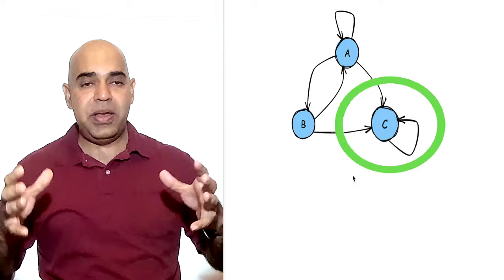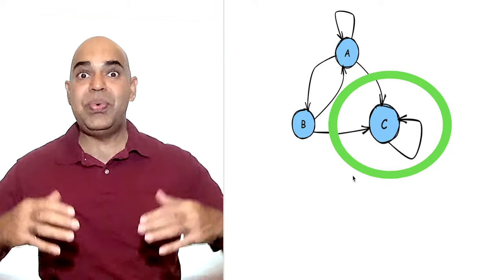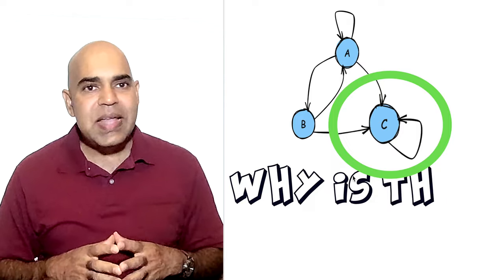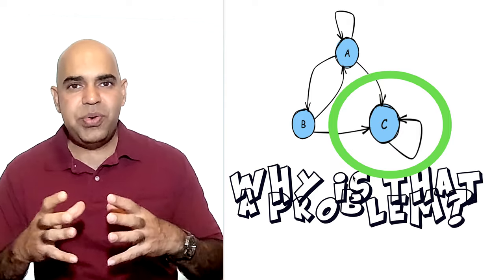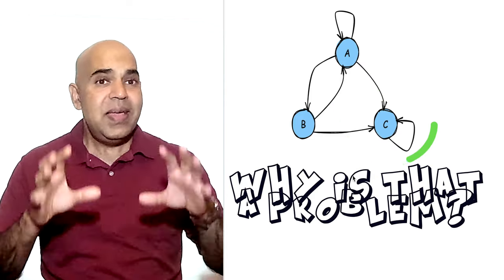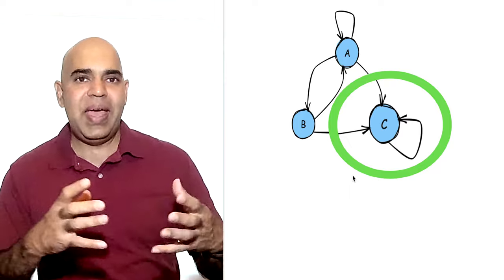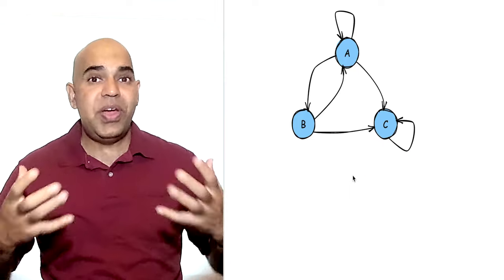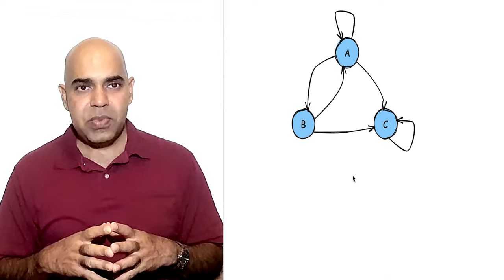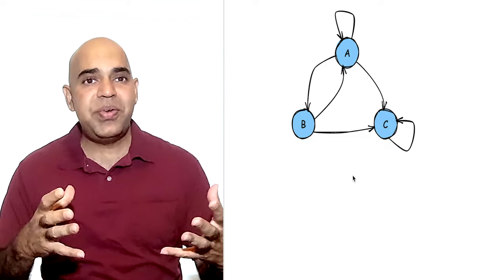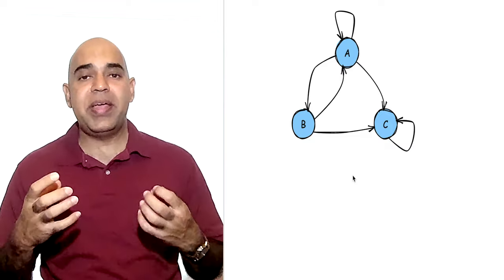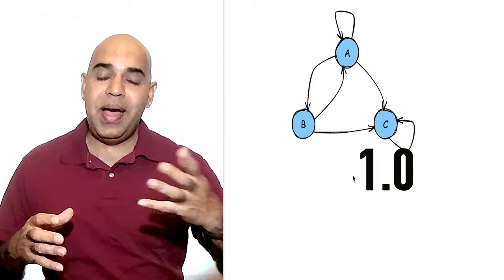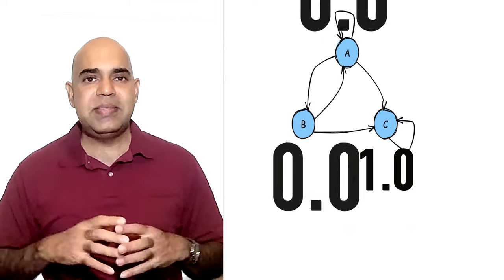A spider trap does not hyperlink to other websites. Why is that a problem? The spider trap webpage on the internet would get all the page rank juice after running the page rank algorithm. So the spider trap will have a page rank score of 1.0 and the other websites will have zeros.